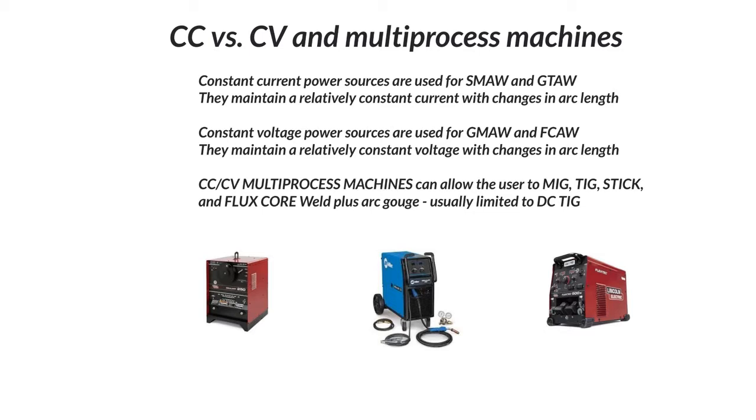Constant current power sources are used for, let's underline this, stick and TIG. They maintain a relatively constant current with changes in arc length.